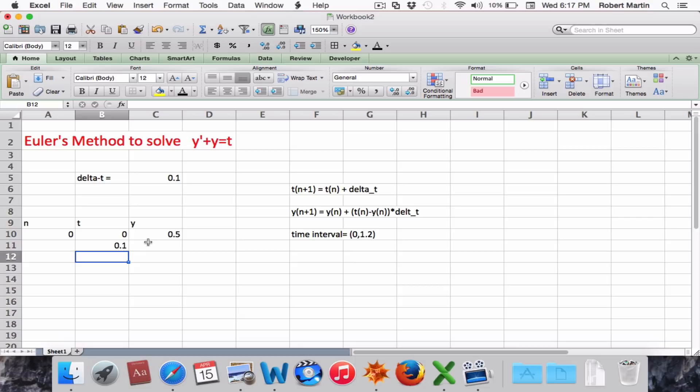Next, we select y sub 1, the cell where we will store y(n+1), and again hit equal and insert the formula. Over here, we're reminded that the formula for y sub 1 is y0 plus the slope, which for this problem is t minus y times delta t. So I simply select the cell above,